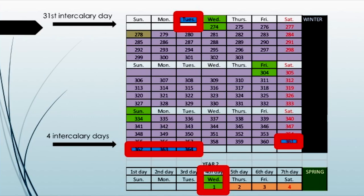I've switched in this view to counting the literal days. You'll see at the very end the four intercalary days: 358, 359, 360. The 360th day always lands on Friday. Always. Then you have your four intercalary days.